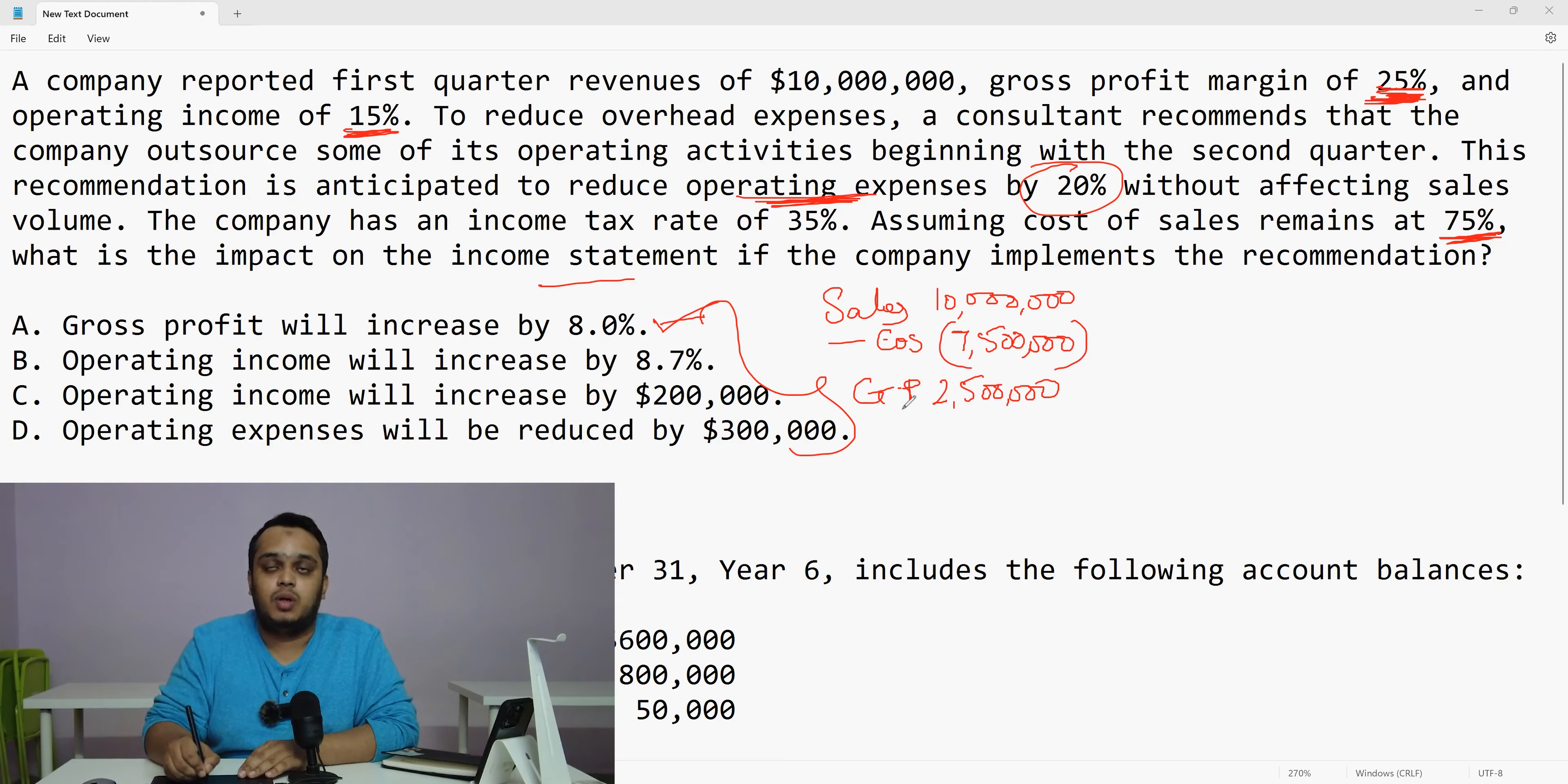Then what is next minus operating expenses. Now we don't know what is the operating expenses, but we know what is the operating income. It is 15% of my sales. So operating income is 1.5 million. Now in this, this is 1.5 million. The difference between the two is 1 million. It is understood here.